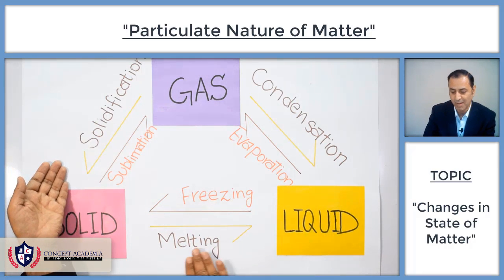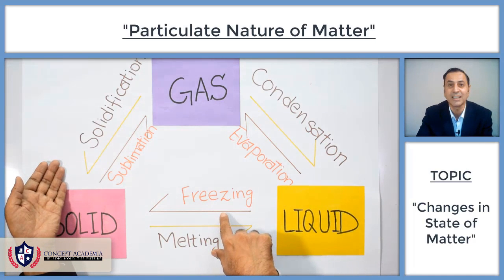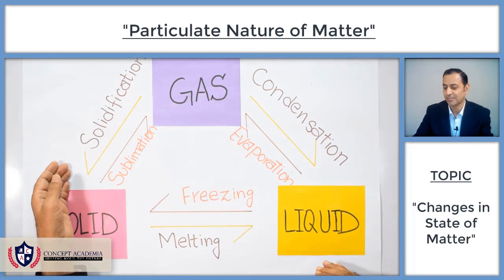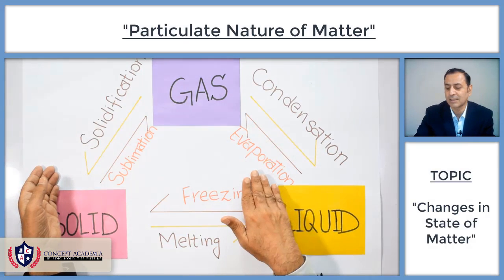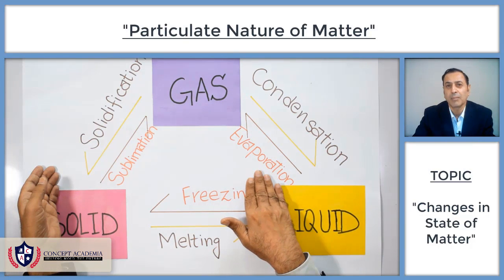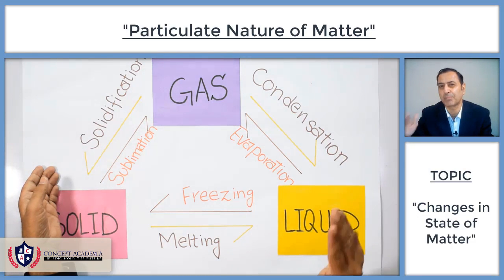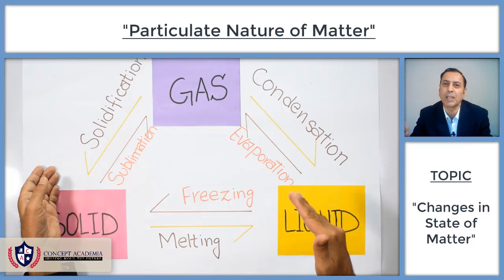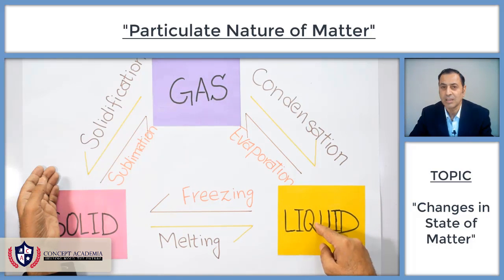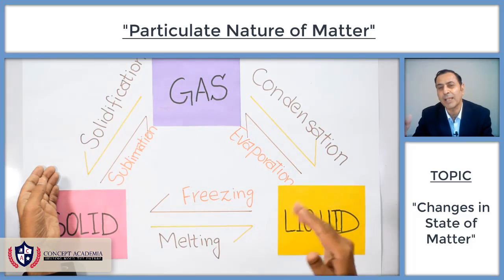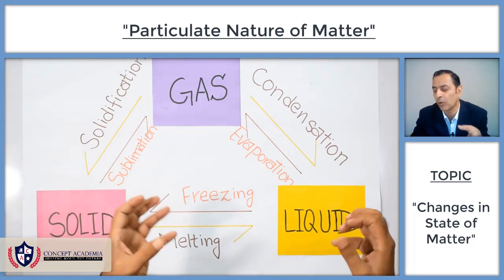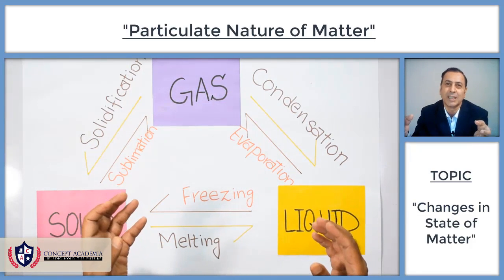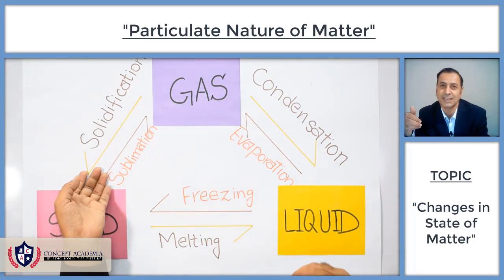Solid to liquid is melting, and liquid to solid is freezing. When liquid converts into gas, it is called evaporation, but if it takes place at a specific temperature, that is called the boiling point. At the boiling point, all the molecules of liquid start converting into gas. Below the boiling point, if liquid converts into gas, that is evaporation.